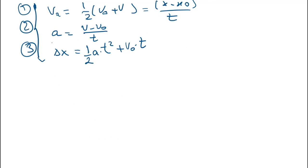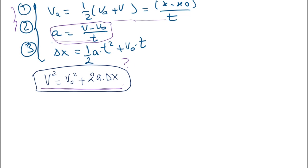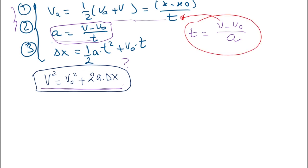We now have three equations and need one more to fully solve motion in one dimension problems. The last equation is v² equals v₀² plus 2a·Δx. To find this equation — notice it contains only displacement, acceleration, and velocity with no time variable — we go back to the acceleration definition and solve for time: t equals (v minus v₀) divided by acceleration.